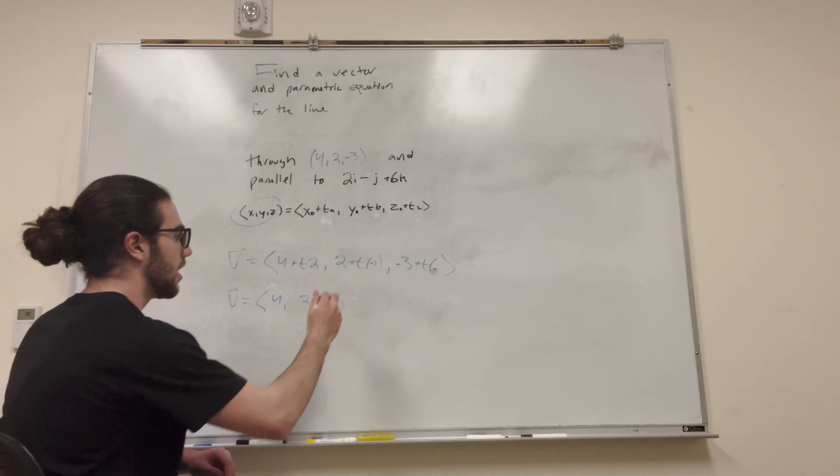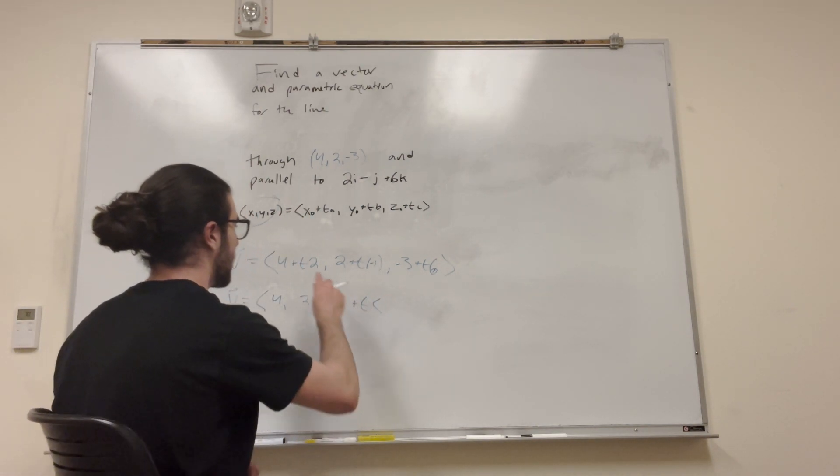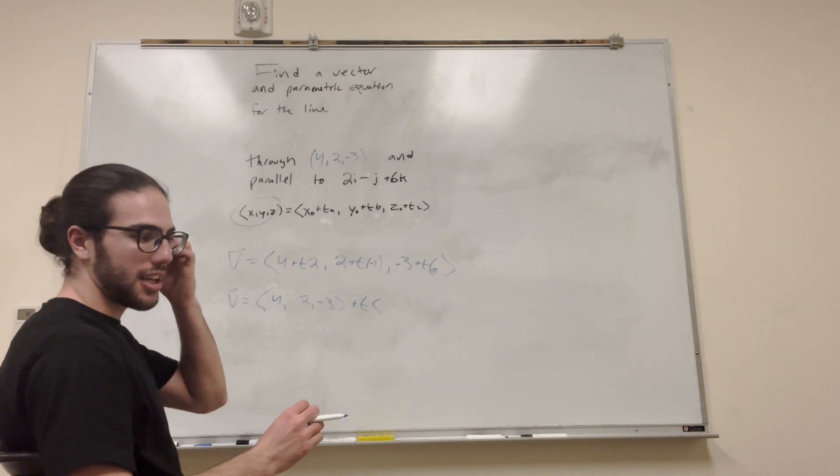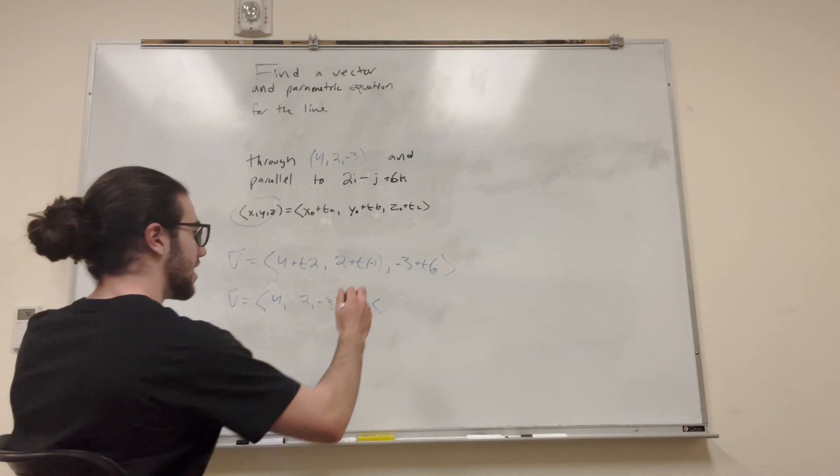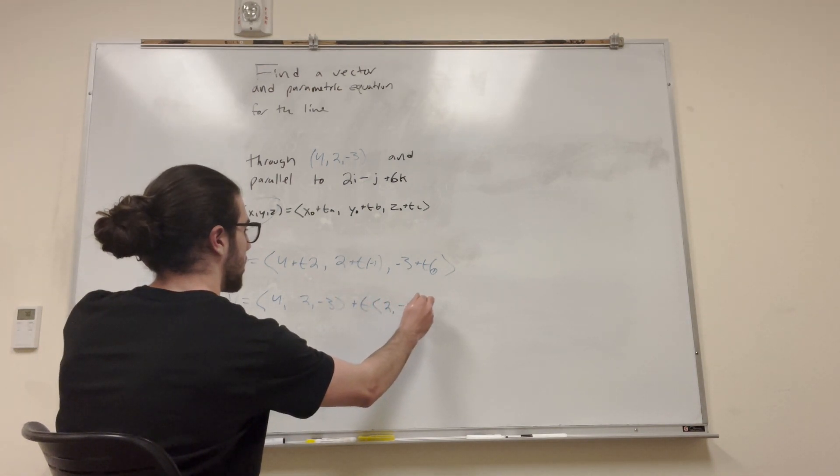Then it's going to be plus T, and then our parallel vector, basically, our same vector, which is just here. We're bringing out the T, basically. So it's going to be 2, negative 1, 6.